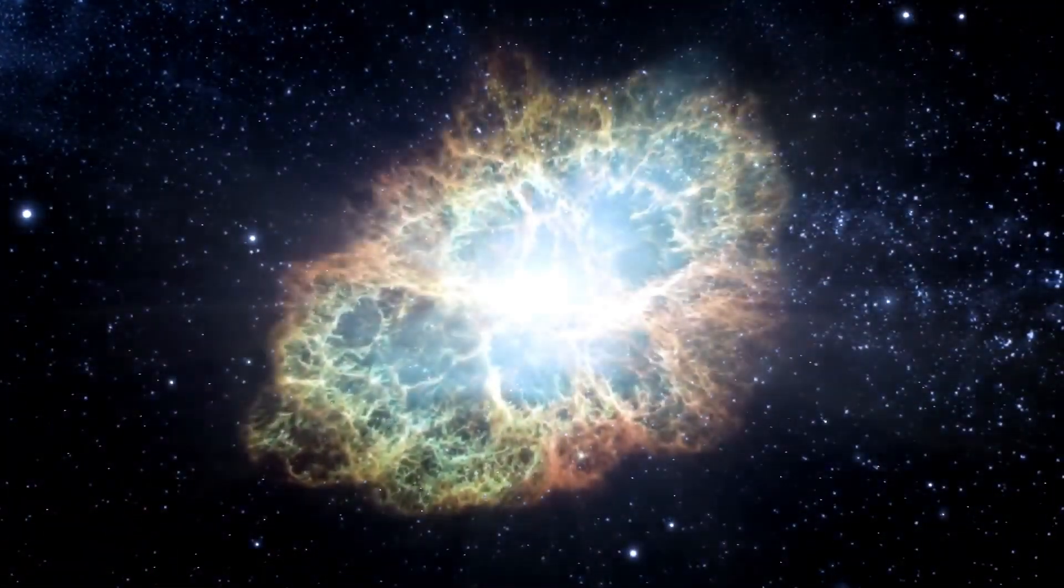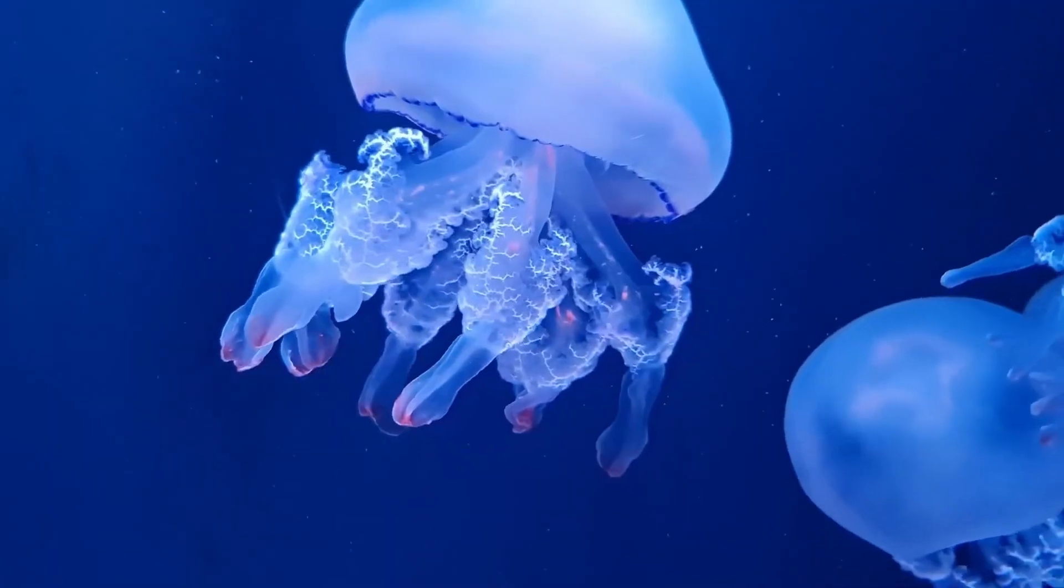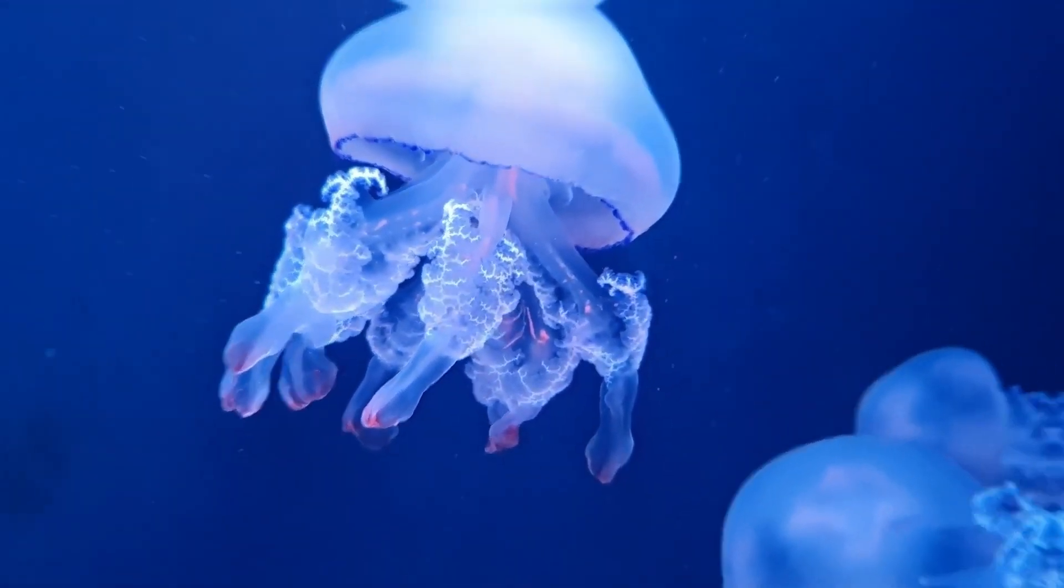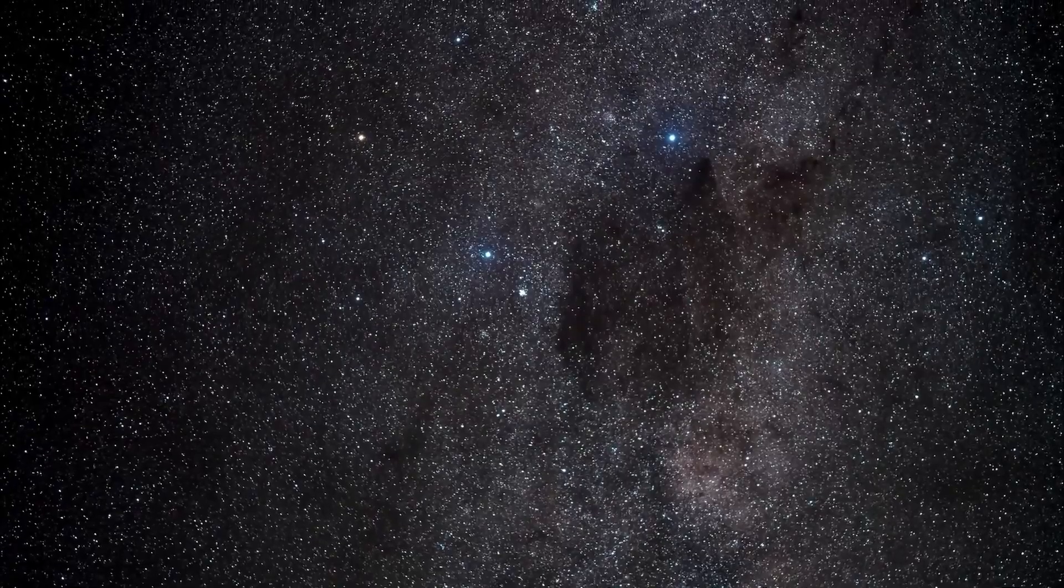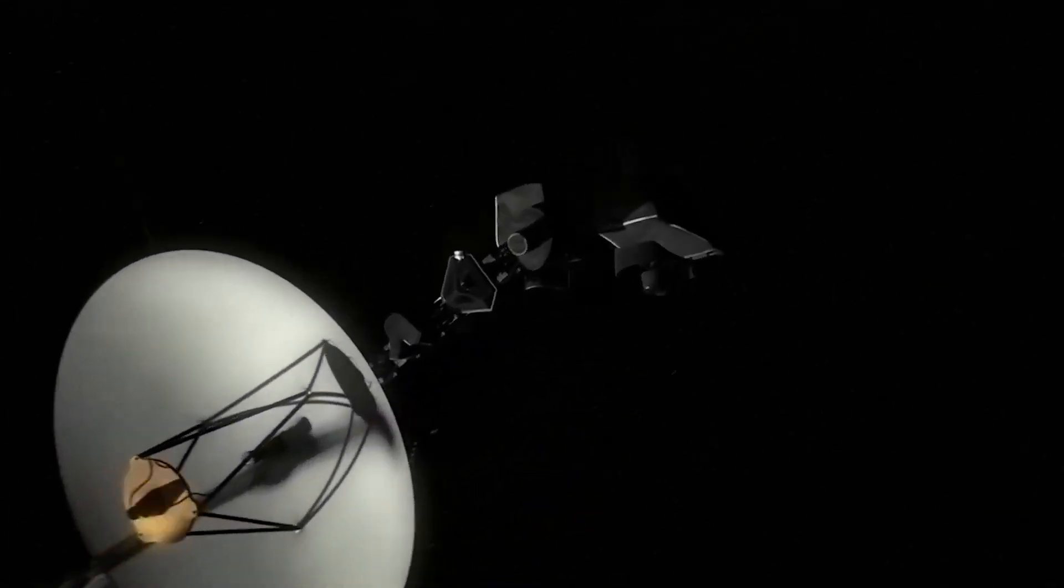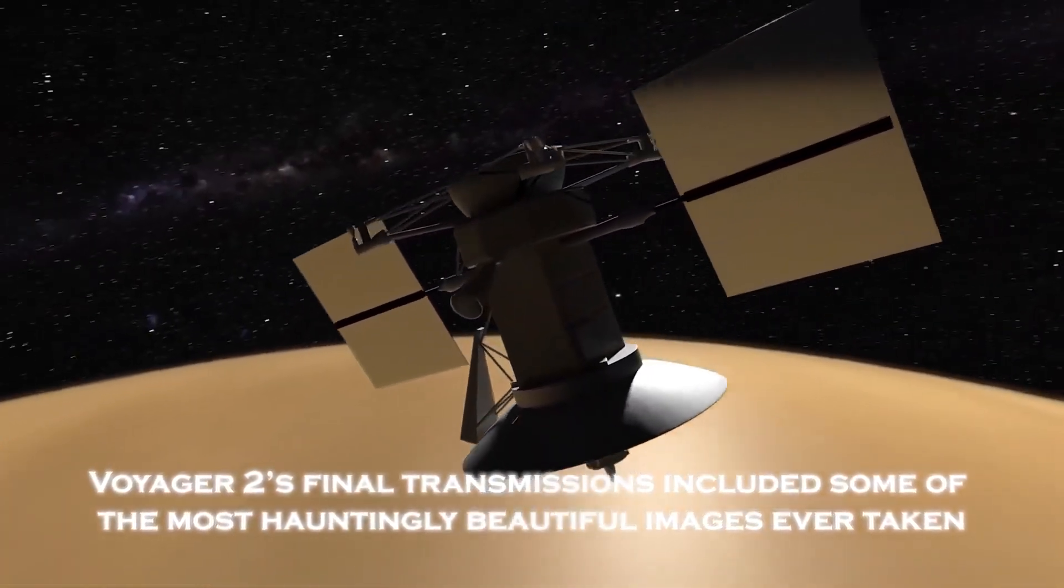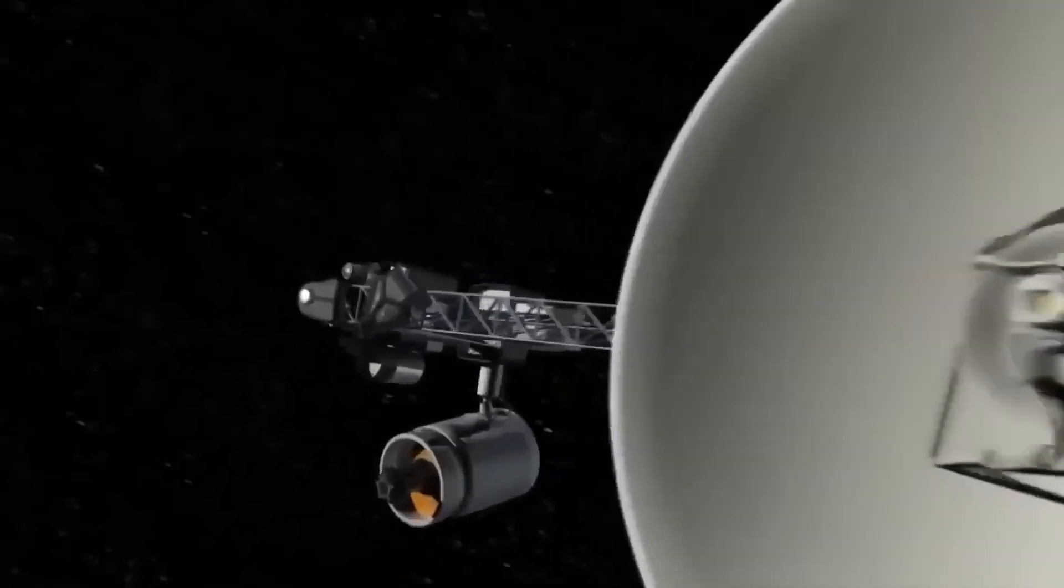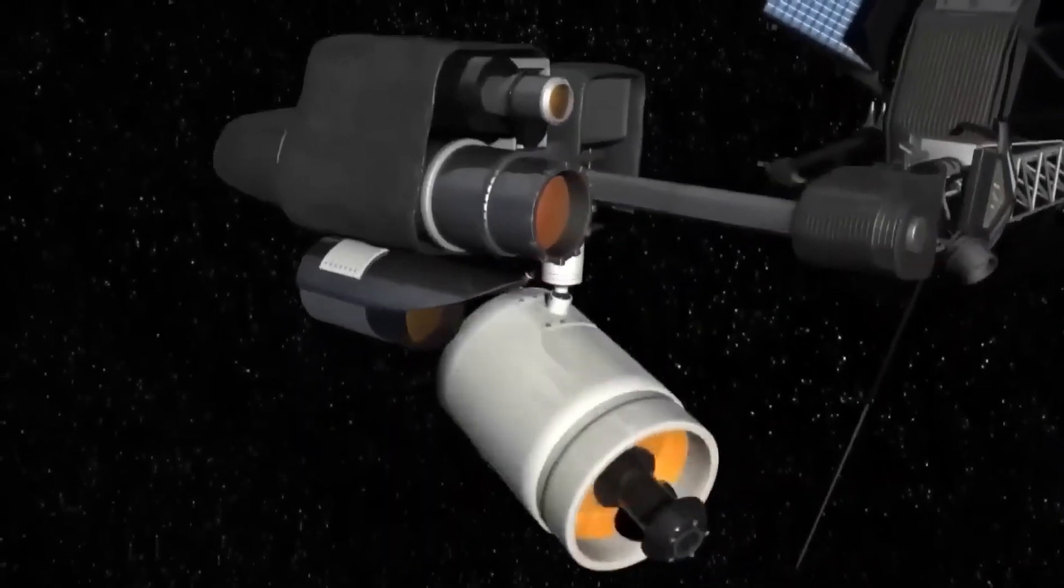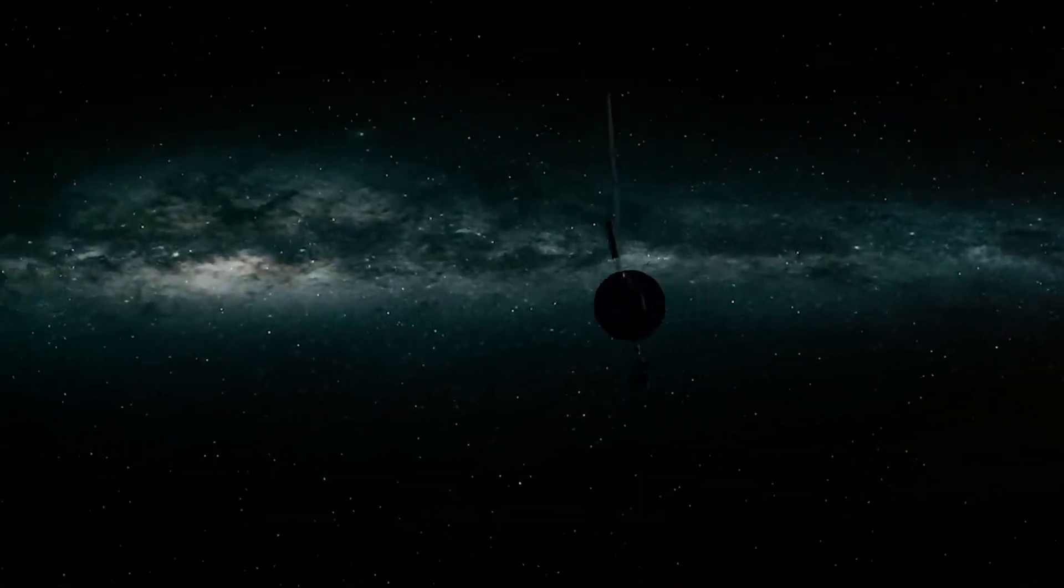Designed to last just five years, Voyager 2 has exceeded all expectations, continuing to send back data over four decades later. Its endurance is a testament to the ingenuity and craftsmanship of the engineers who built it. Despite its age, Voyager 2's team has ingeniously managed its power supply, shutting down non-essential systems to ensure its instruments continue functioning. The spacecraft now operates with less power than a standard light bulb, yet its contributions to science remain monumental.